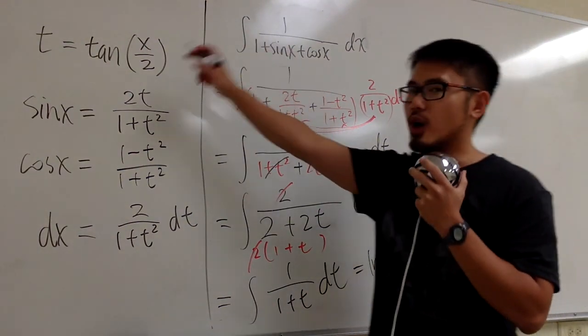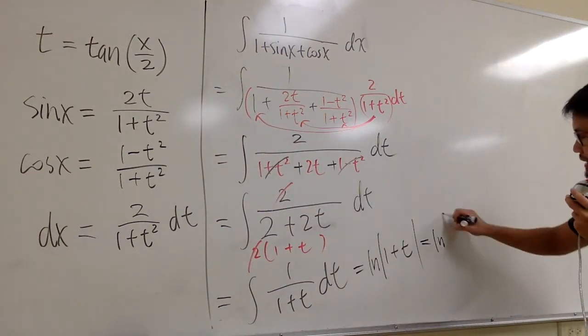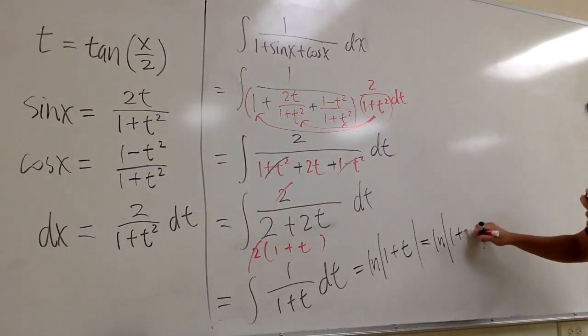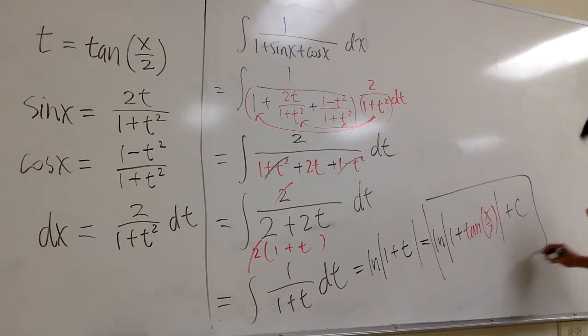At the end, we write t as the original tangent of x over 2. So this is ln absolute value 1 plus tangent of x over 2. And then we are done. Put plus c. This is it.